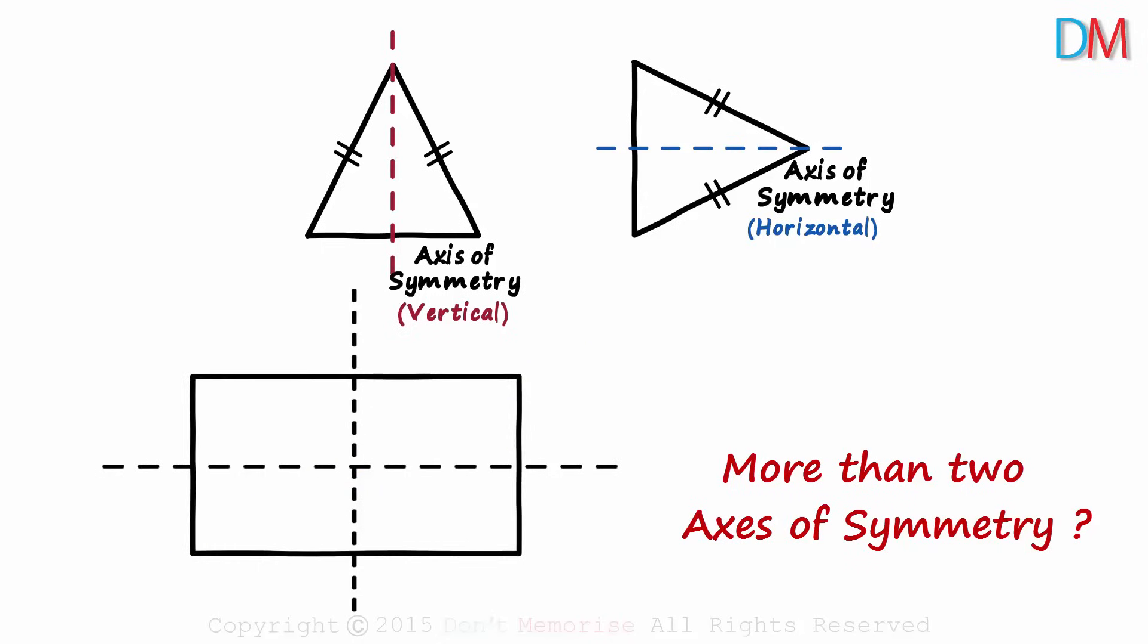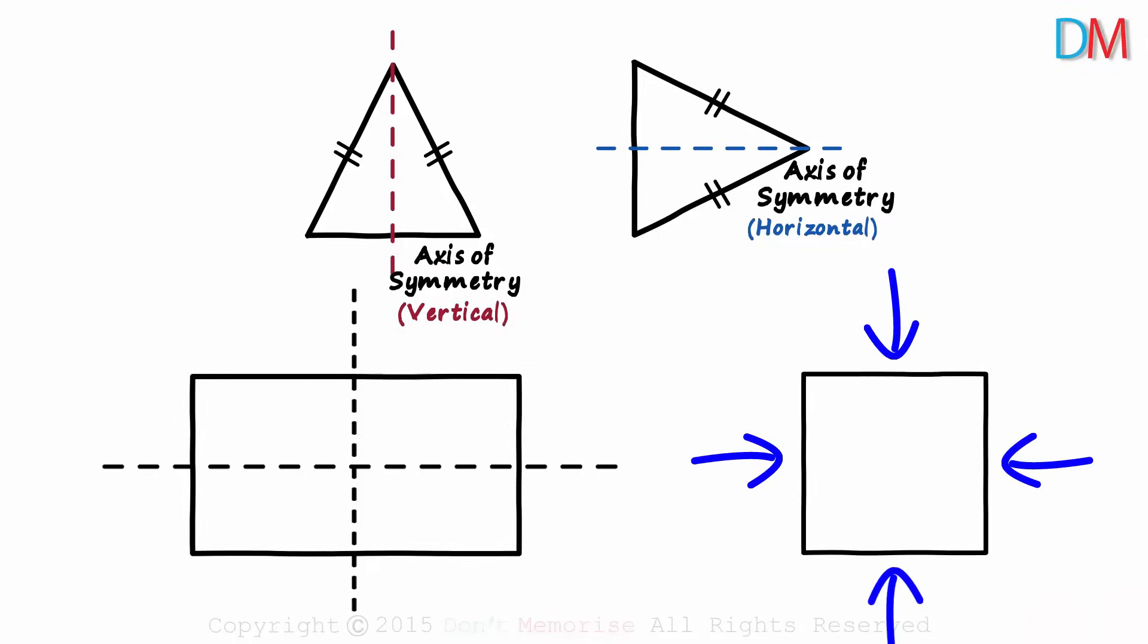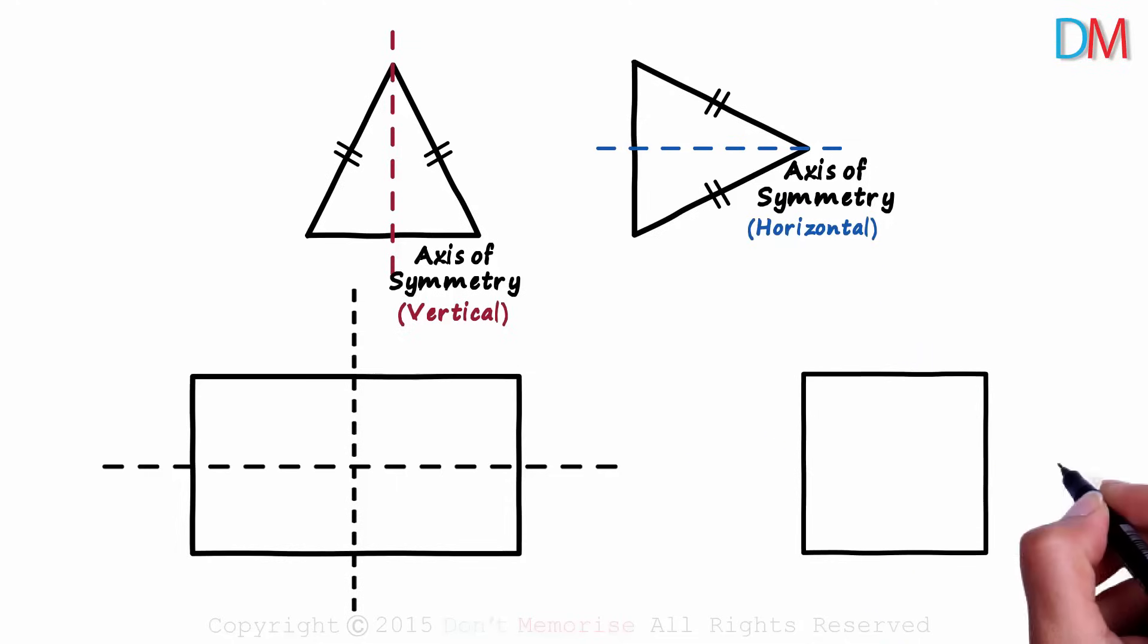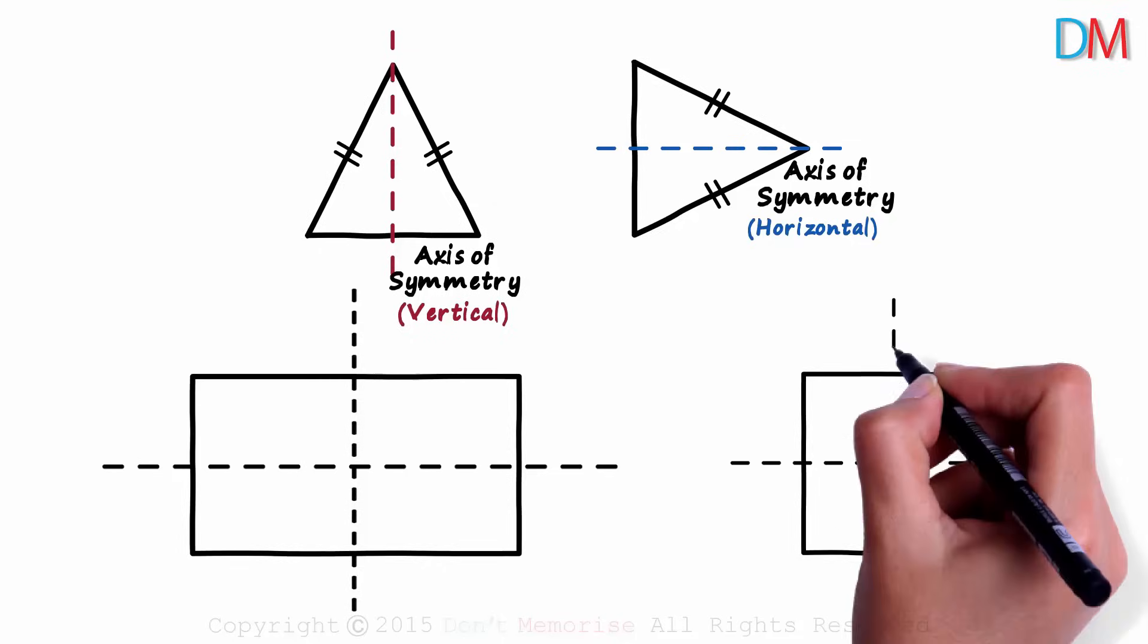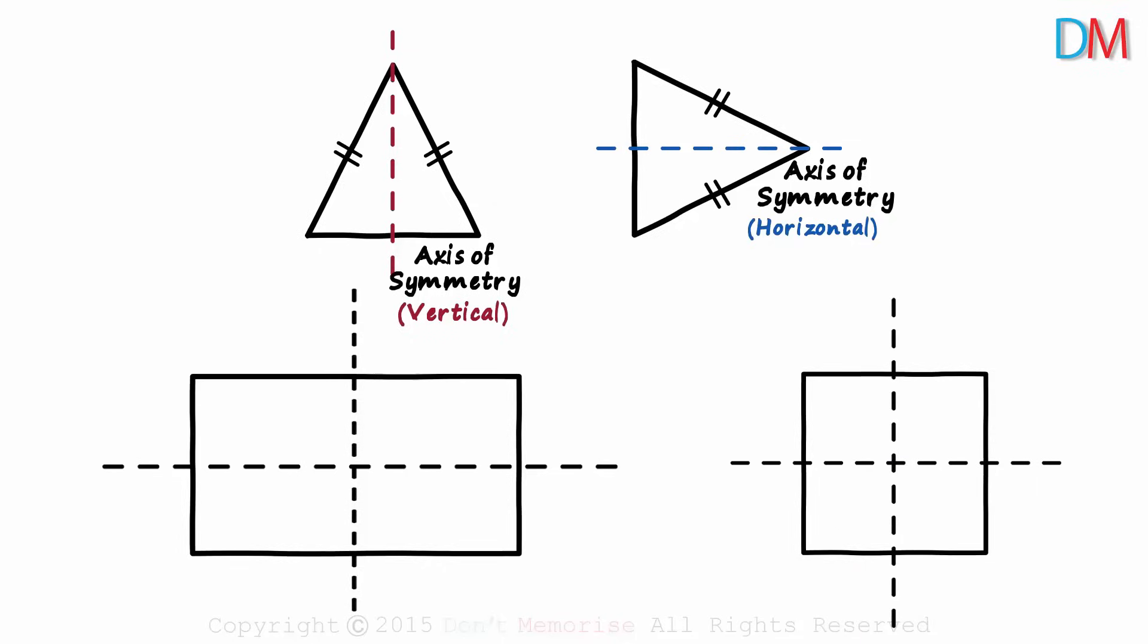Again the answer is yes! Take the example of a square. All its sides are equal and all four angles are right angles. It has a horizontal as well as a vertical axis of symmetry just like the rectangle.